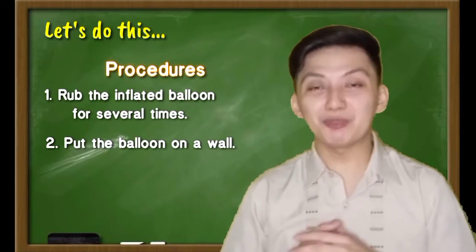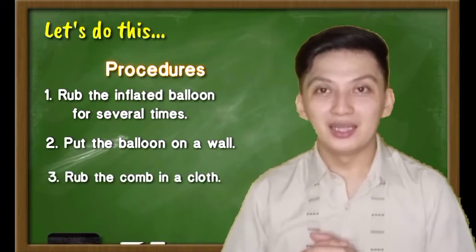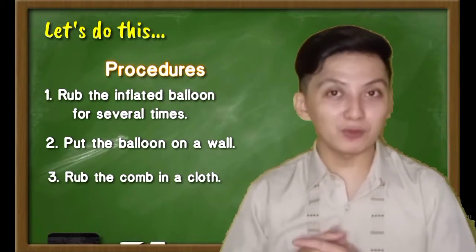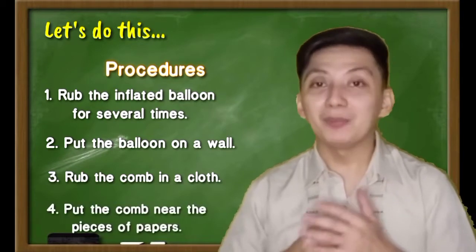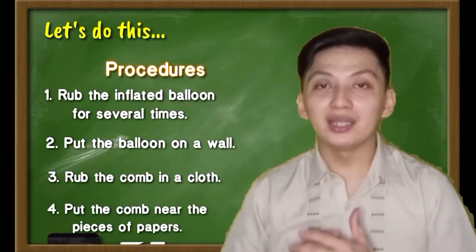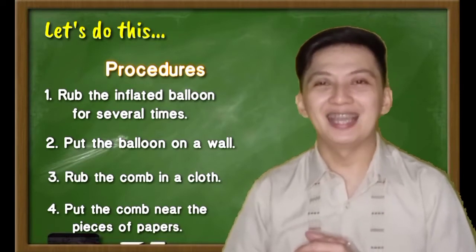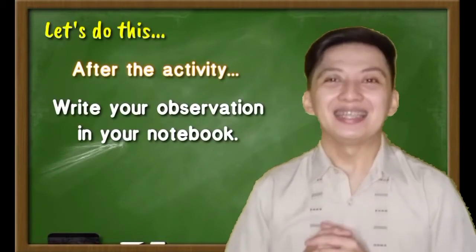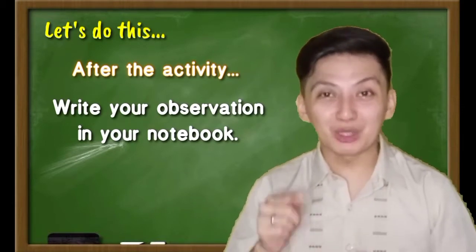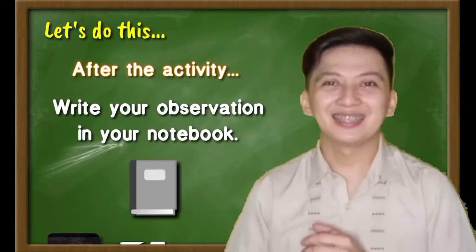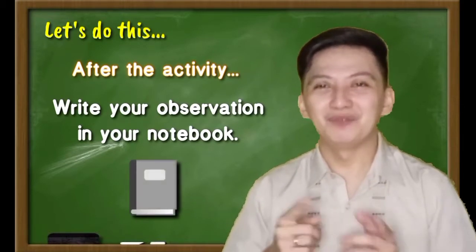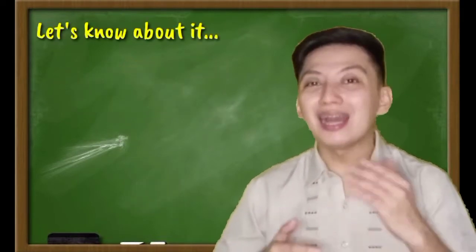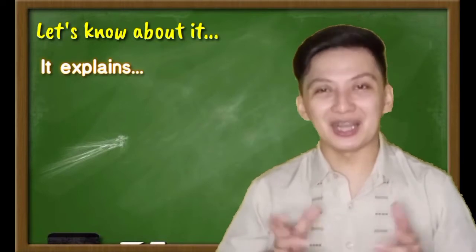For the next procedure, using a comb, rub it on a piece of cloth. After rubbing it on a piece of cloth, place that rubbed comb near the small pieces of paper, and observe what will happen. After that, write your observation on your notebook. That is how our activity explains charges.